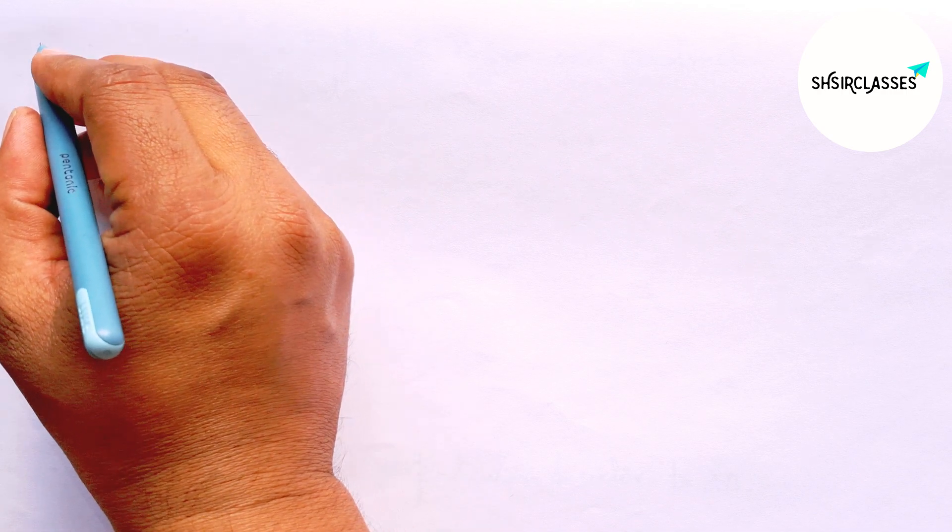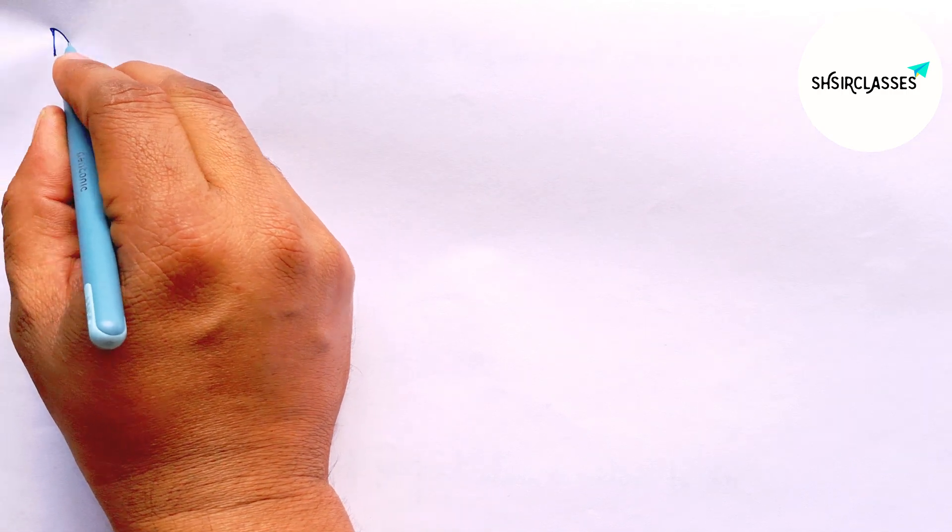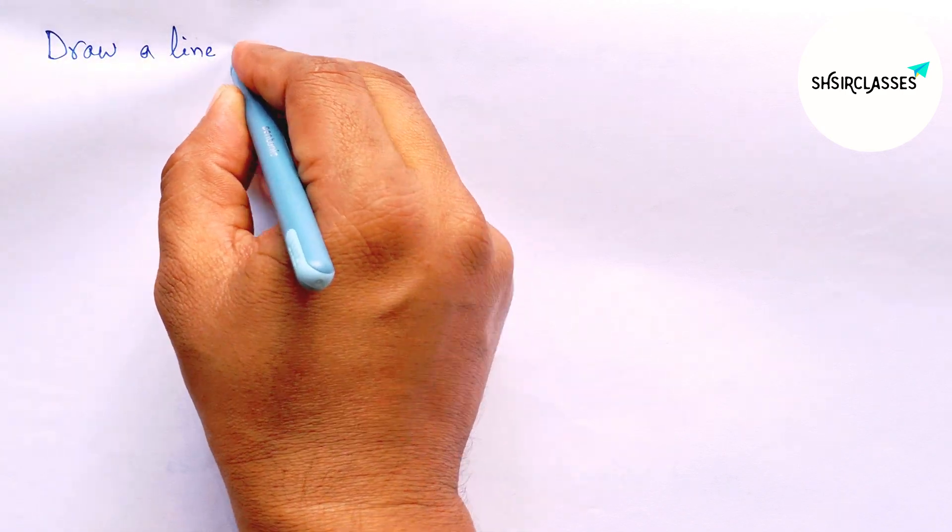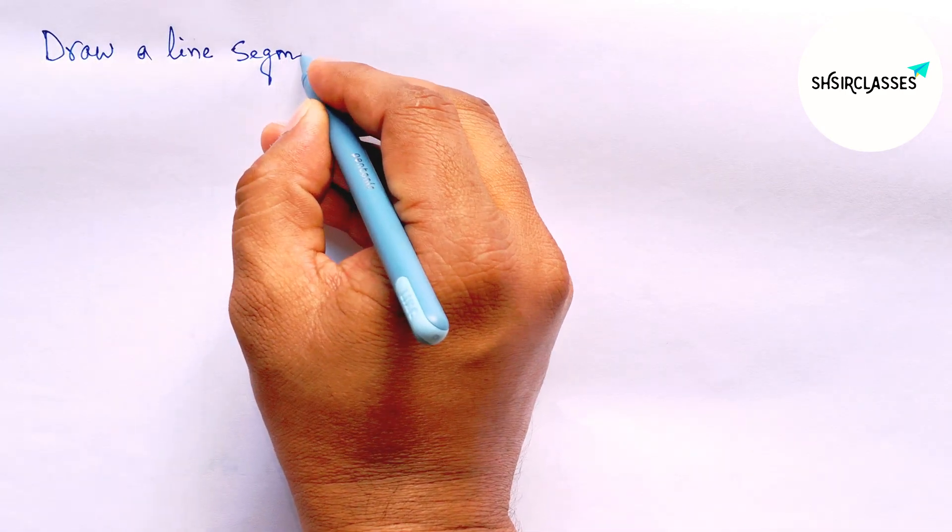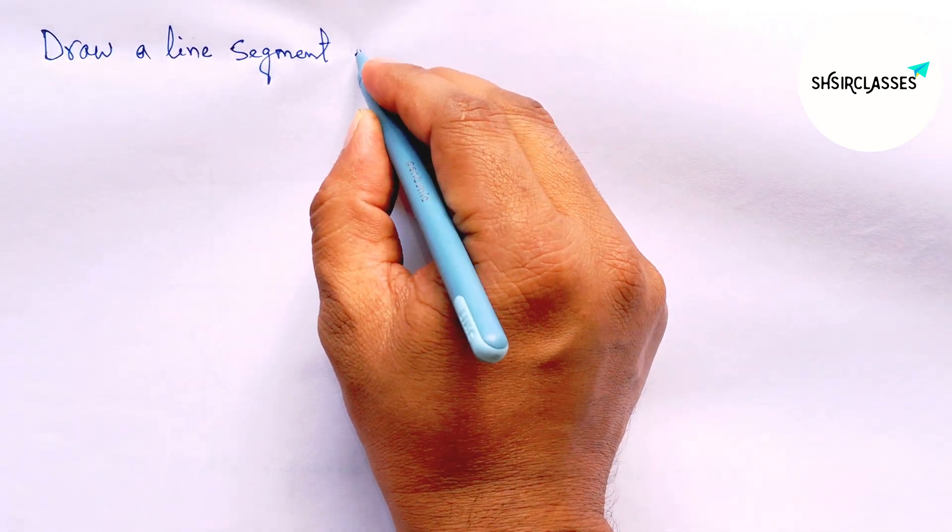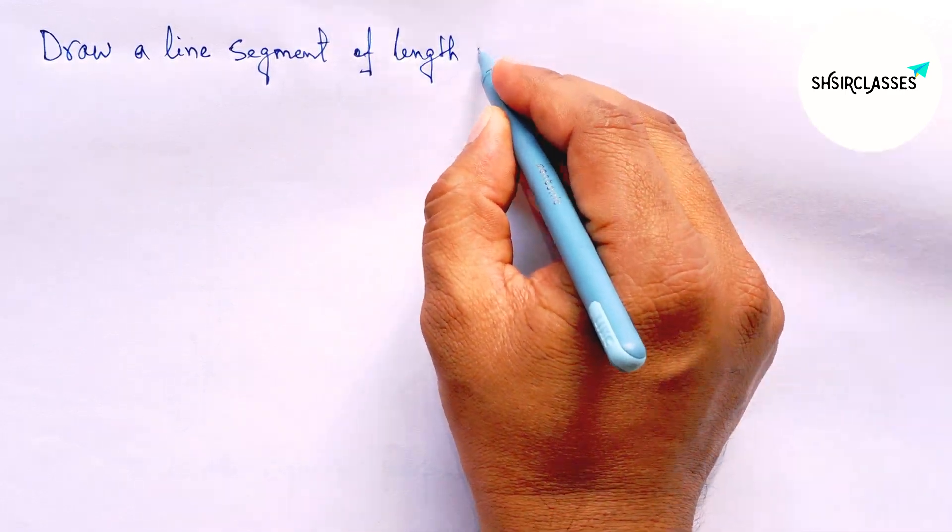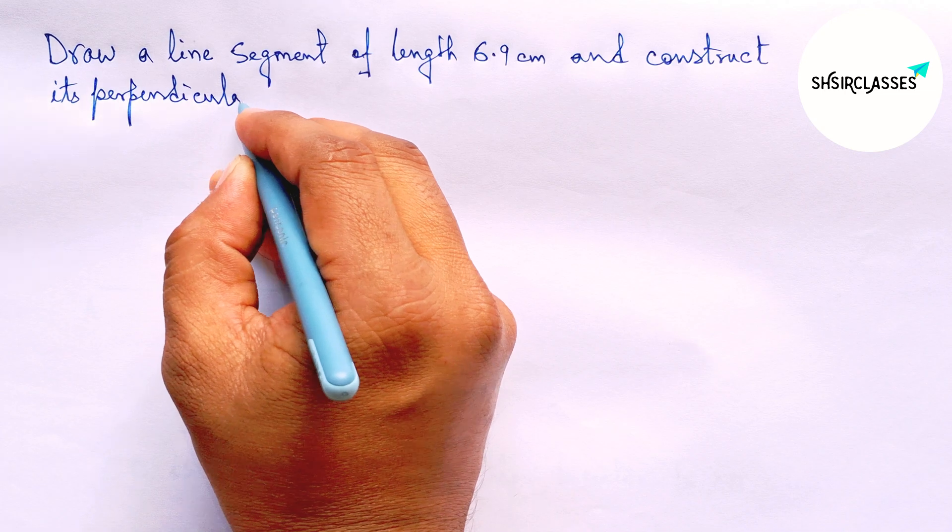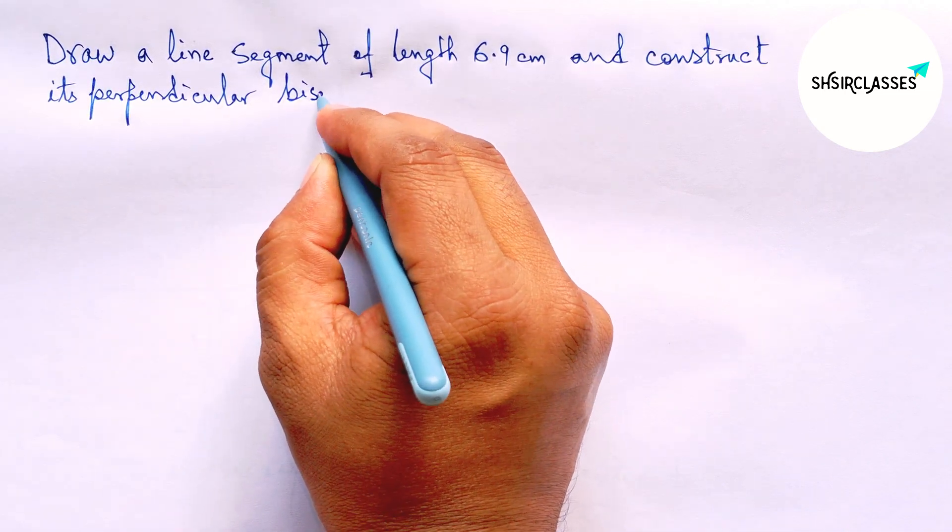Hi everyone, welcome to Essay Share Classes. Today in this video, draw a line segment of length 6.9 centimeter and construct its perpendicular bisector to the given line in easy way. So please watch the video to the end.